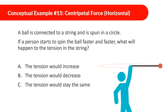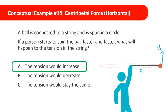A ball is connected to a string and spun in a circle. If a person starts to spin the ball faster and faster, what will happen to the tension in the string? As the ball moves faster, the tangential velocity increases and it wants to fly outward more. The string must provide more force to keep it in the circle, so the tension increases. If spun too fast, the string would break.